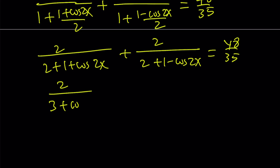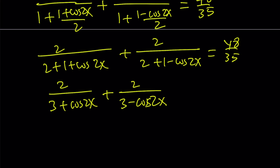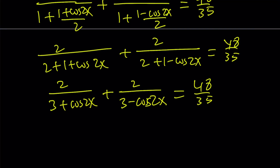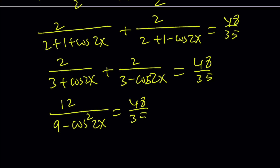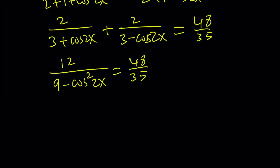We get 2 over 3 plus cosine 2x, plus 2 over 3 minus cosine 2x. Making a common denominator, the cosine terms cancel in the numerator, and we end up with 2 times 6, which is 12, divided by 9 minus cosine squared 2x, and this equals 48 over 35.